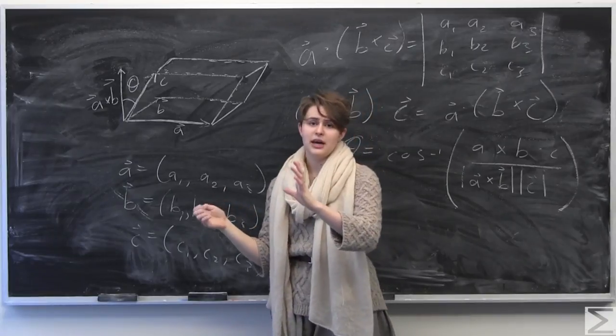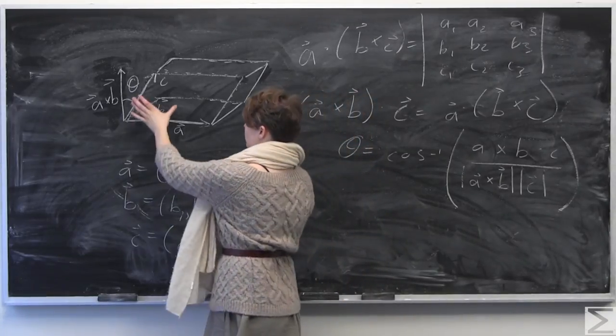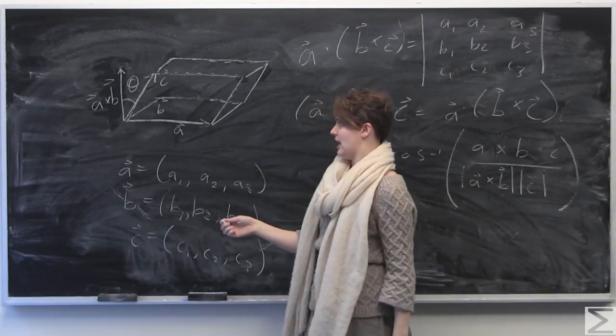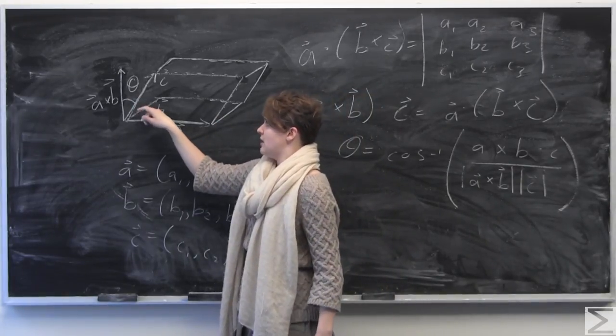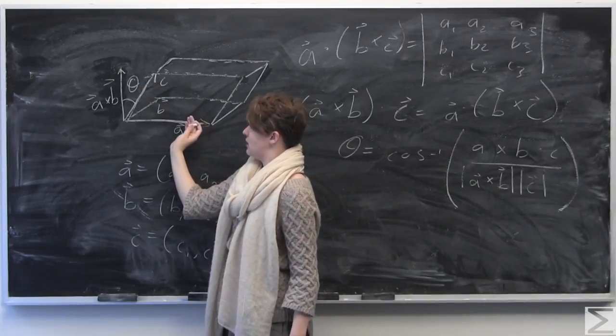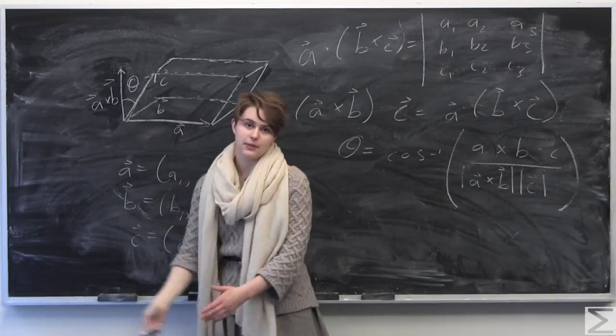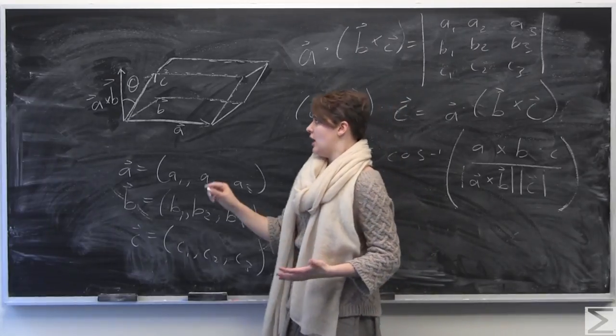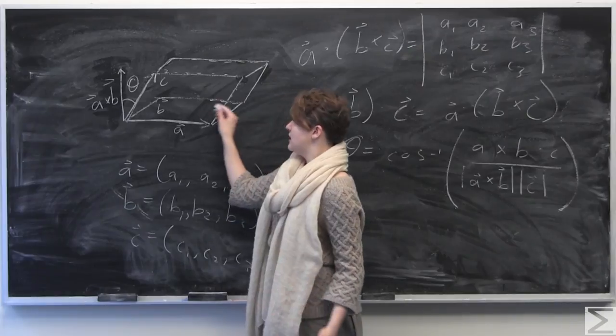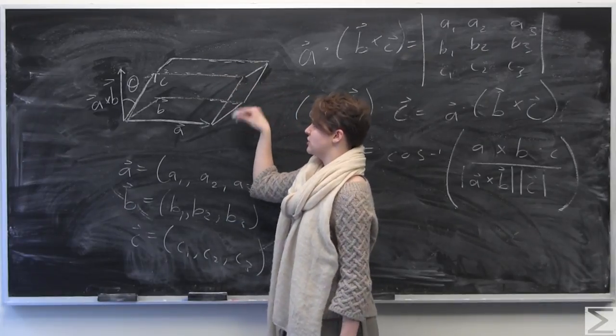It defines, as long as these vectors are linearly independent, they define this parallel piped, which is kind of this box that's just slanted to the side. And this quantity here also to note is going to be theta, which is the distance between C and A cross B, which will be kind of important later, but not super important, but cool to know.